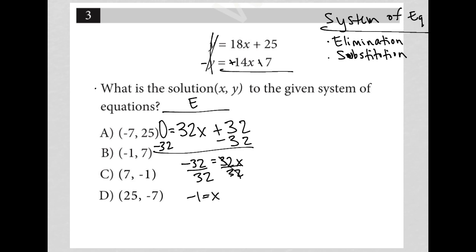Knowing that x is negative 1 actually takes me directly to choice B. I wouldn't need to figure out what the y value is, because choice B is the only answer that has an x value of negative 1.